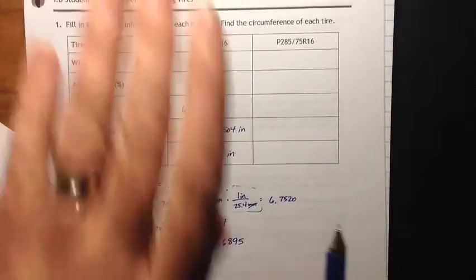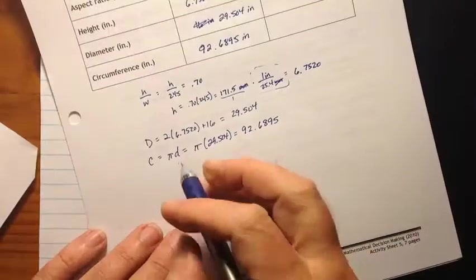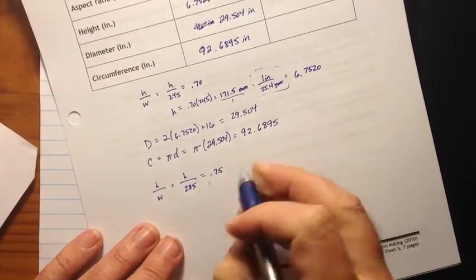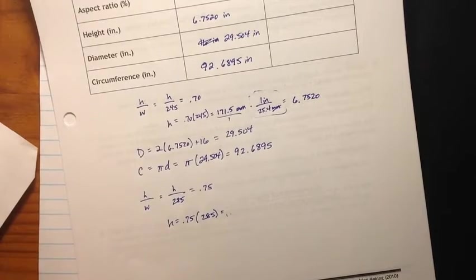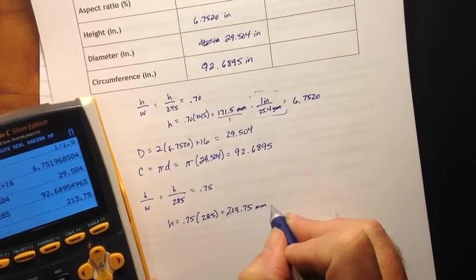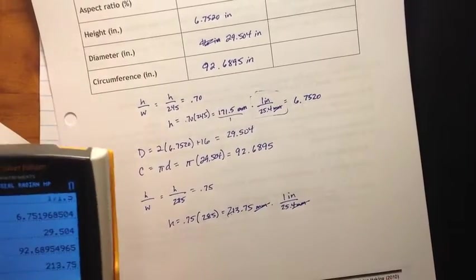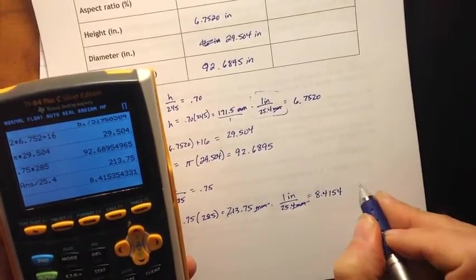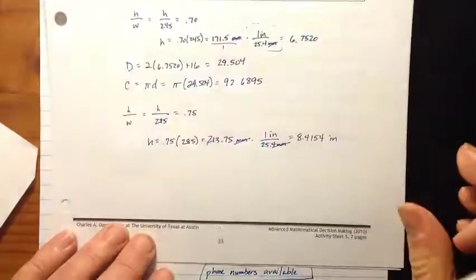All right. So now we're going to replace that with bigger tires. 285 millimeters. This has a 75% aspect ratio. So height over width is equal to height over 285 equals 0.75. So the height is 0.75 times 285. 0.75 times 285 is 213.75 millimeters times 1 inch for 25.4 millimeters. Millimeters are going to cancel. So divide by 25.4 and I get 8.4154 inches. 8.4154 inches.